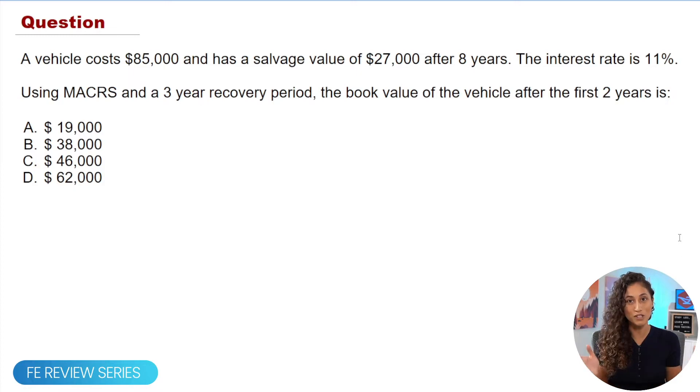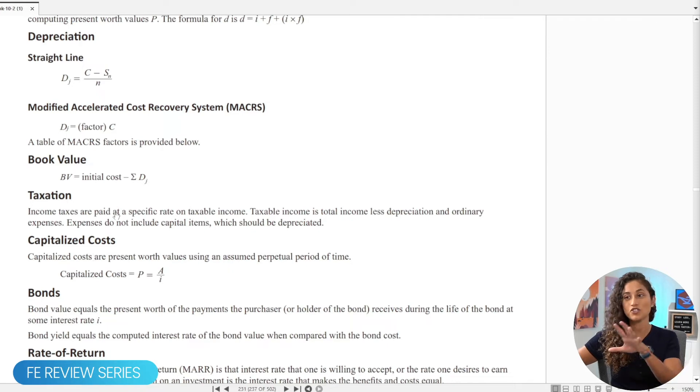So the first thing we got to do is go to the reference handbook and take a look at the equations. Under engineering economics, you guys will see here that we have the equation for the book value, which equals the initial cost minus D. D is the depreciation and we can solve it either using the straight line method or MACRS. In the problem that was given to us, we want to find the book value using MACRS. So we're going to use this equation here.